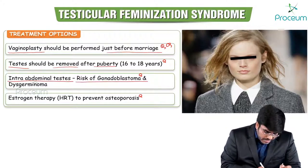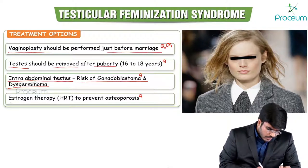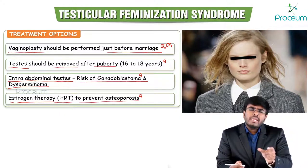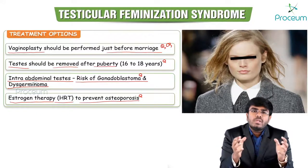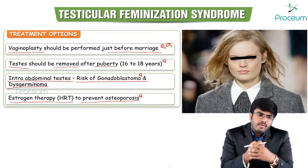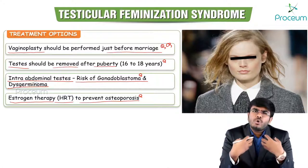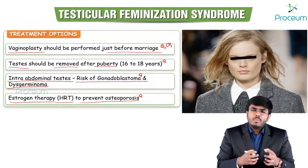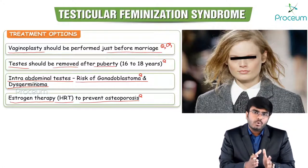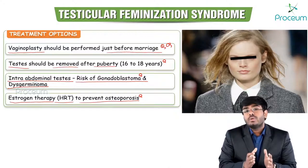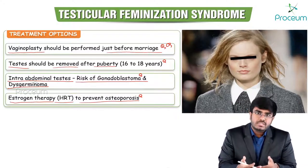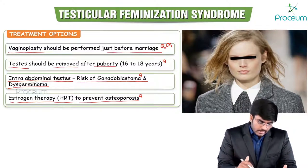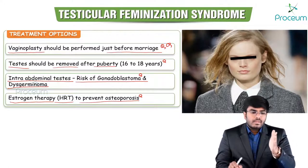Intra-abdominal testes should be removed due to the risk of gonadoblastoma and dysgerminoma. After gonadectomy, these females must be kept on hormone replacement therapy (HRT) to prevent osteoporosis. Removing the testes eliminates the estrogen source. Without estrogens, osteoclasts become overactive, causing excessive bone resorption and osteoporosis. Therefore, estrogen replacement therapy is given after gonadectomy.